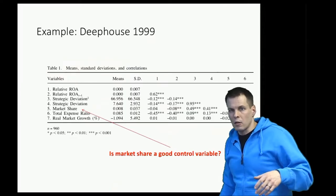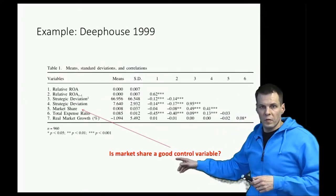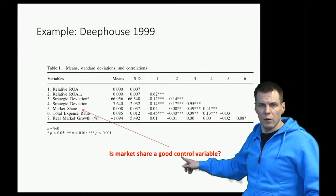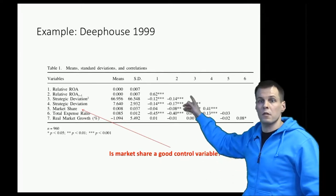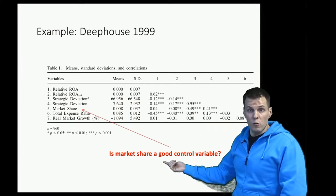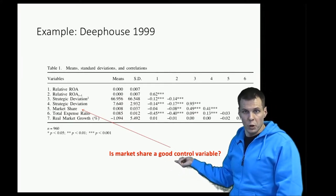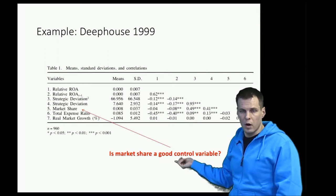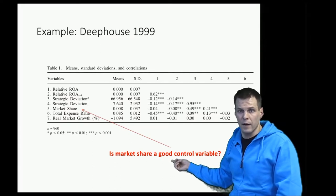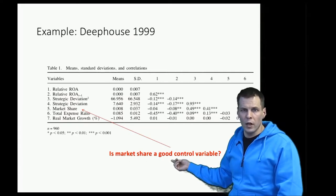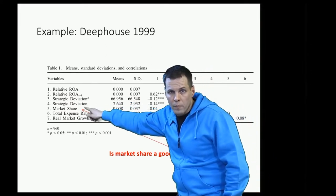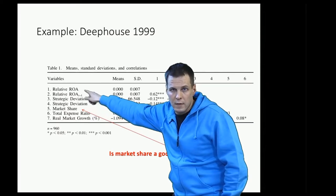Let's take a look at the next example. We have the article by Deep House, and they have a variable called market share. So is market share a good control variable based on this correlation matrix? To understand whether it's a good control variable empirically, we have to look at certain correlations. Market share is a relevant control variable if it's correlated with the key independent variable. We are looking at the effects of strategic deviation — variable four — on relative return on assets — variable one.